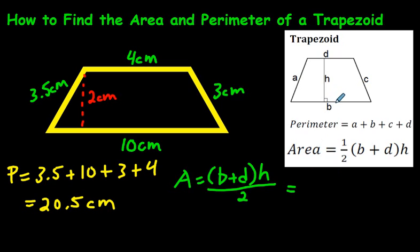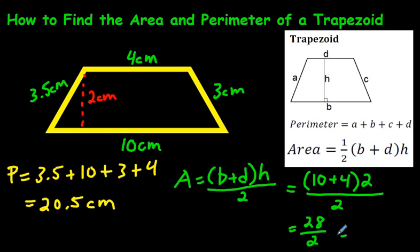What this formula is saying is add up the two parallel sides. So b and d are the two parallel sides, which would be 10 plus 4. We'd go 10 plus 4 in brackets, multiply that answer by the height, which is 2, and then divide by 2. So 10 plus 4 is 14, and 14 times 2 is 28. 28 divided by 2 is 14.